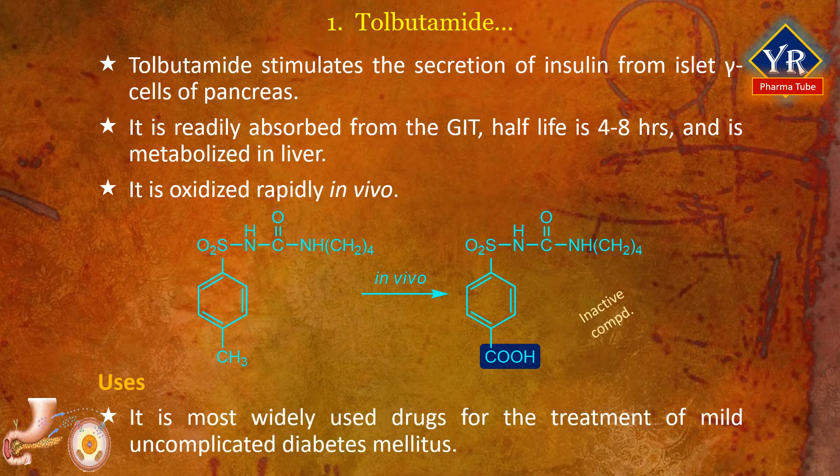Uses of tolbutamide. Tolbutamide may be used in the management of type 2 diabetes. It is one of the most widely used anti-diabetic agents. It is used for the management of mild uncomplicated diabetes mellitus, and for type 2 diabetes mellitus of medium severity with no expressed microvascular complications.